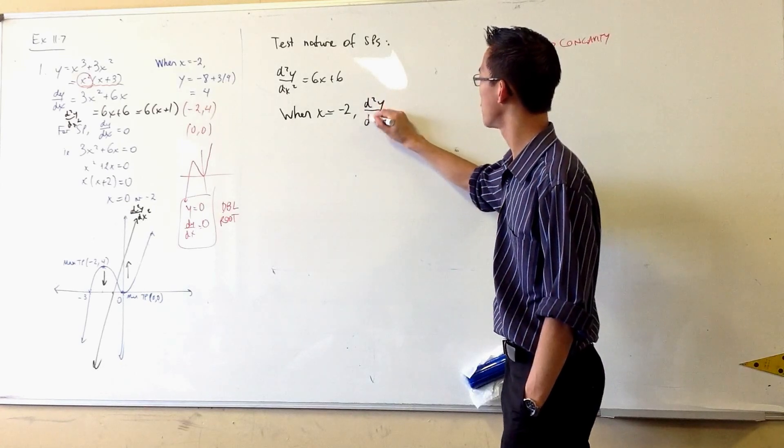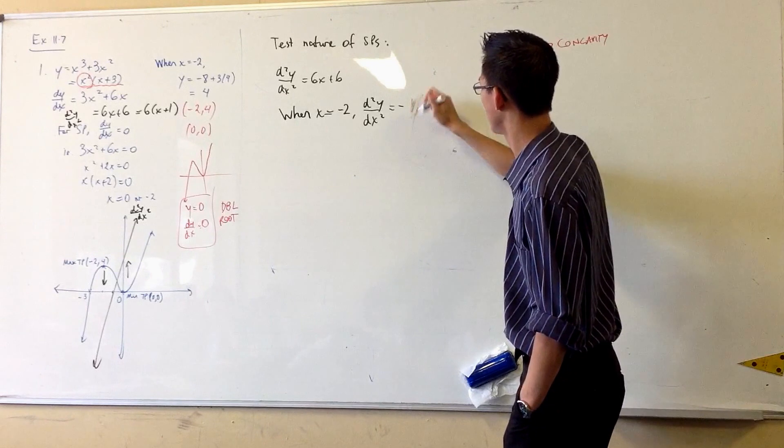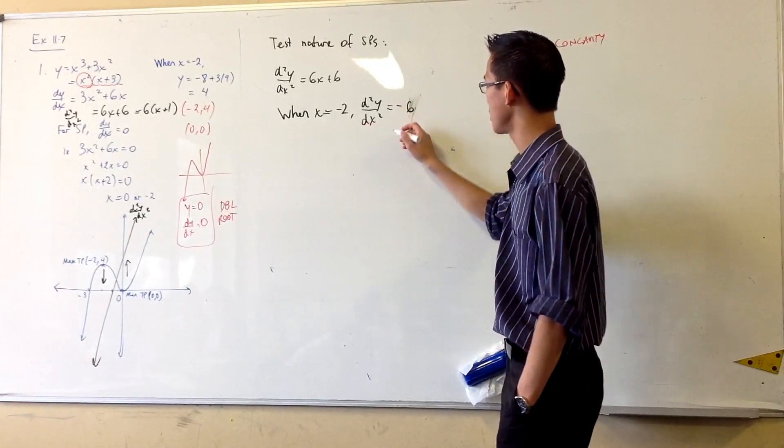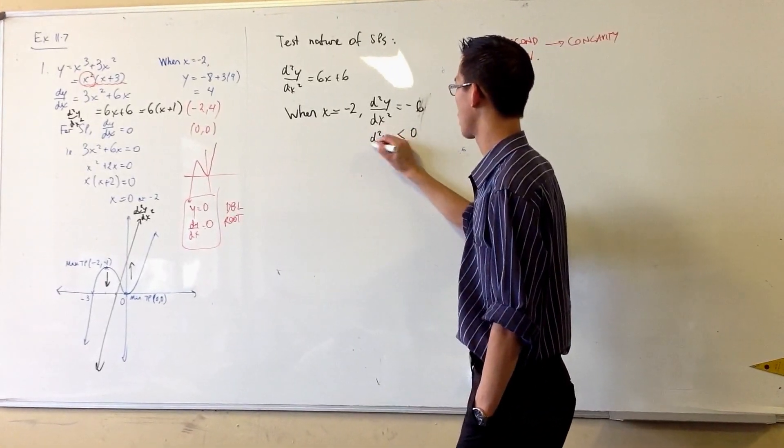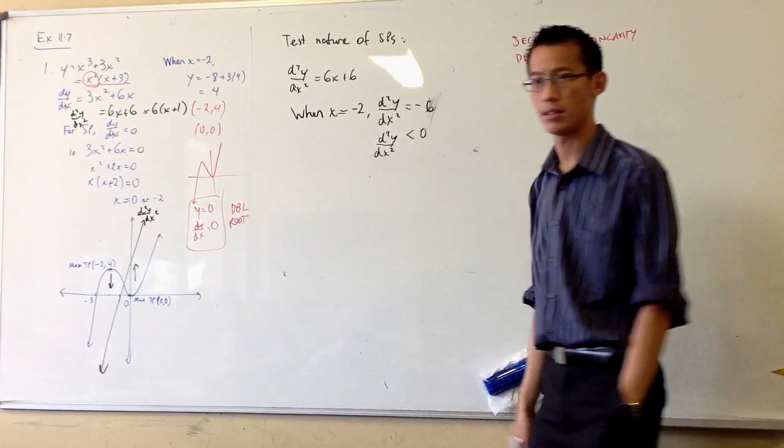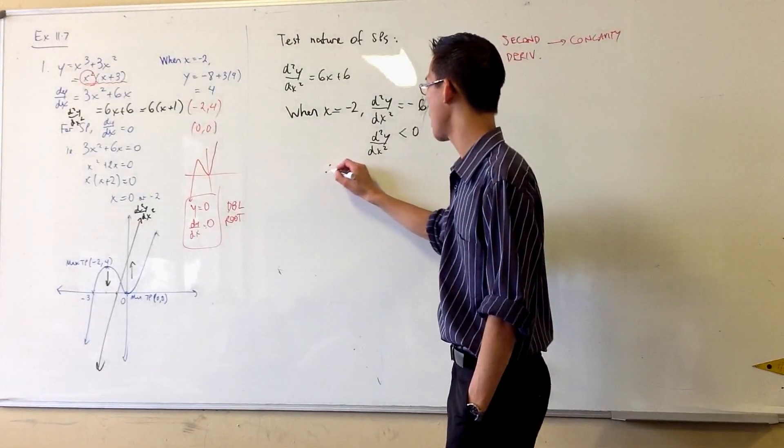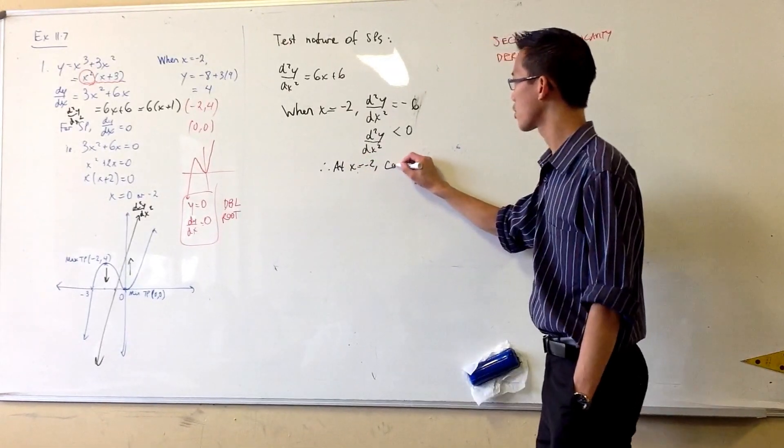The second derivative is, we said minus 6 I think. Right? Minus 6, and this is less than 0. The second derivative is less than 0. Now since the second derivative tells you about concavity, you say therefore, at x equals minus 2, it's concave down.